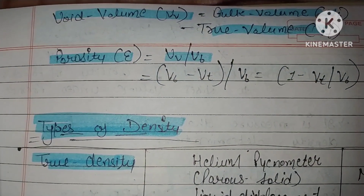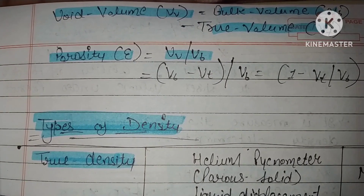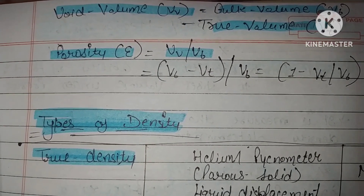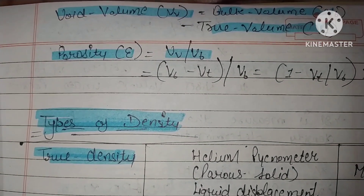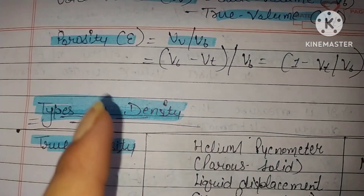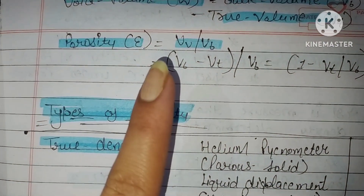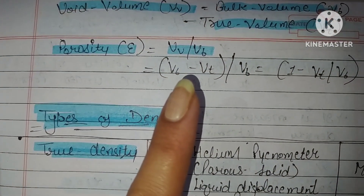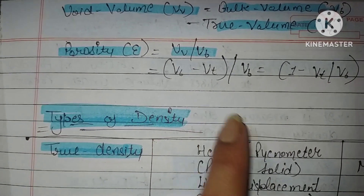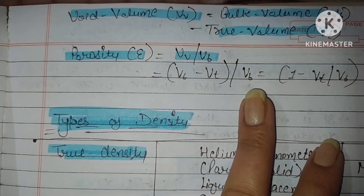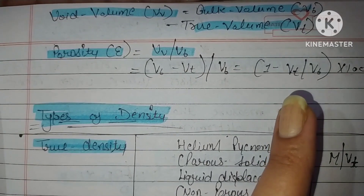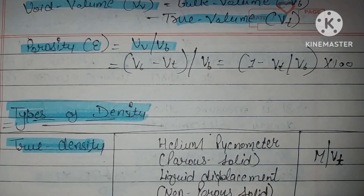Void volume is bulk volume (VB) minus true volume (VT). Porosity is denoted as E, and its formula is: E = (VV / VB) = (VB - VT) / VB × 100, which gives 1 minus VT divided by VB into 100.